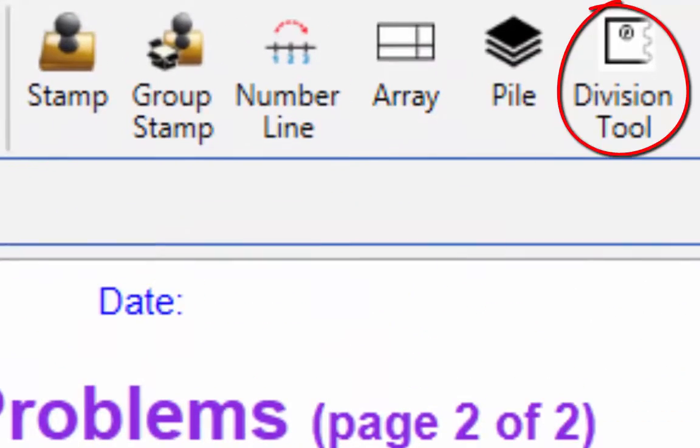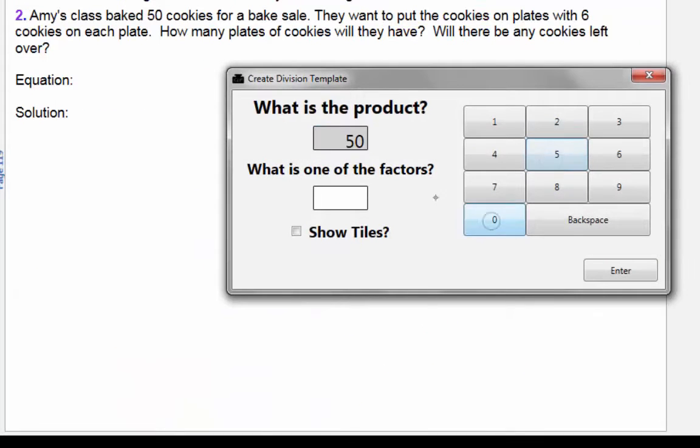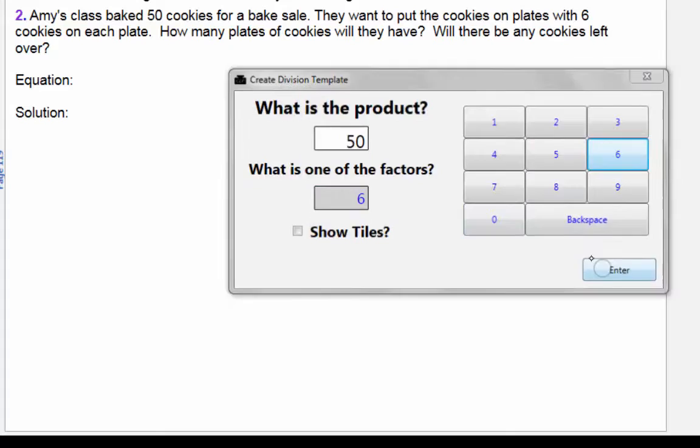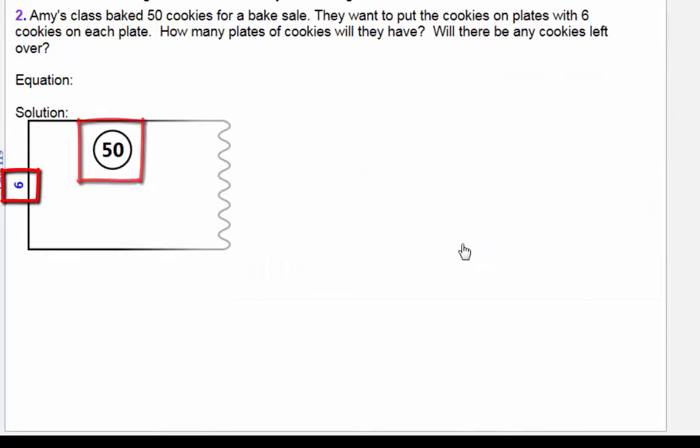The division tool provides students with a visual model for division in terms of arrays. The student specifies a product and one factor to create a division template. The product appears at the top and the factor as a vertical dimension. Since the quotient is unknown, the horizontal dimension is unfinished.